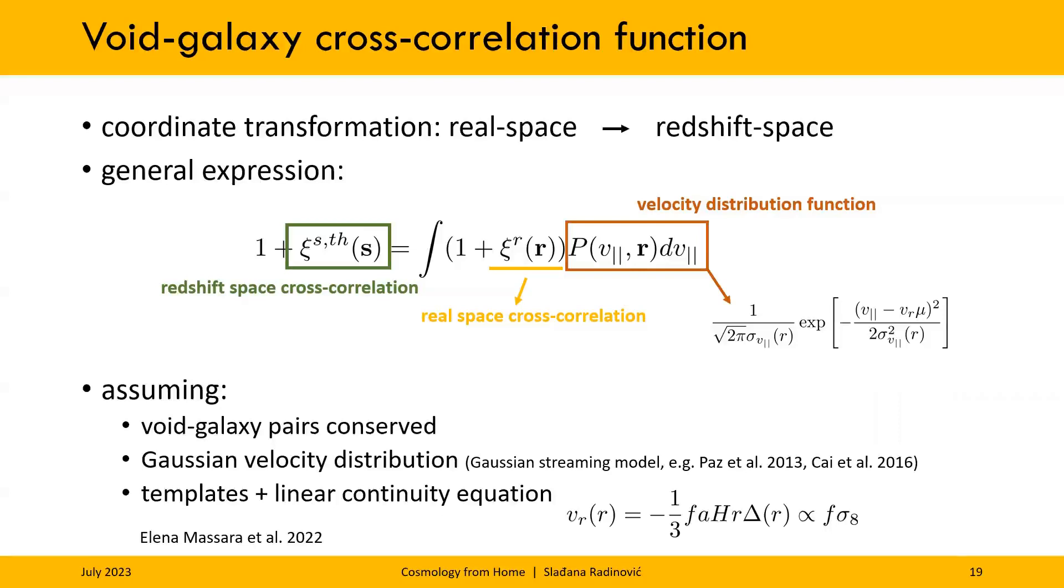The radial velocity, instead, scales with the growth rate, parametrized by f sigma 8. Now, the caveat here is that there's an implicit assumption that the velocities are related to the underlying matter field, delta, with this linear continuity equation. More details into this and whether or not it's a good assumption, you can read, for example, in Elena Massara's work cited here.